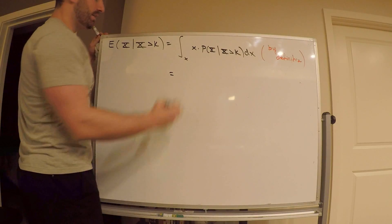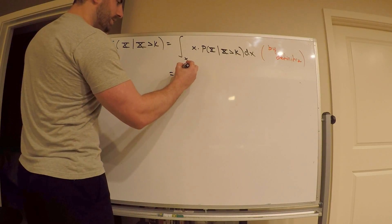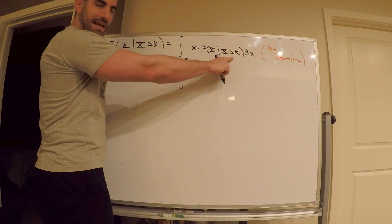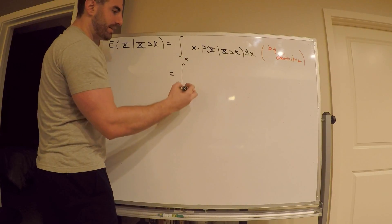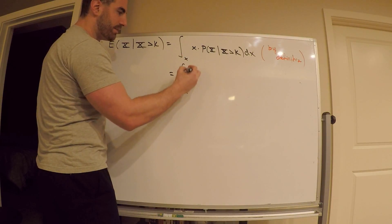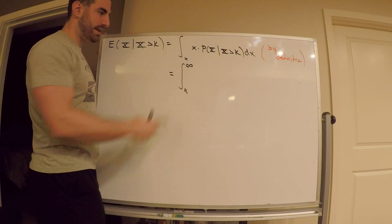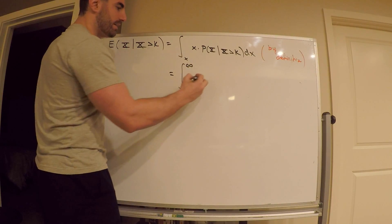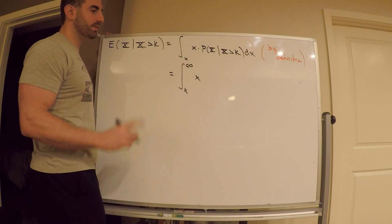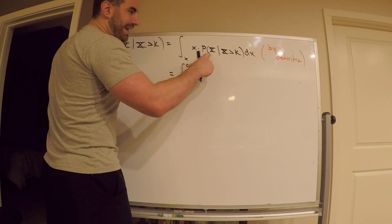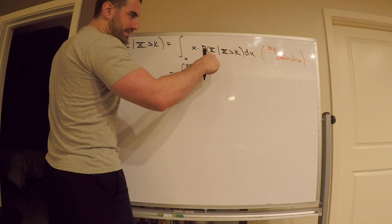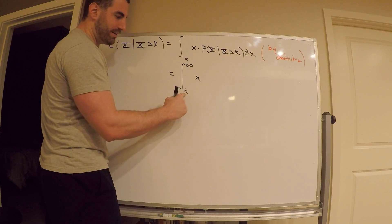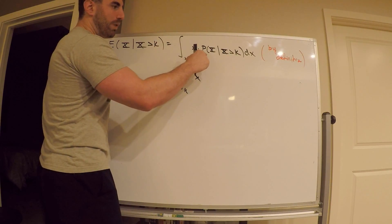By definition, the conditional PDF given X > K means we integrate from K to infinity. Since we're conditioning that X > K, we integrate over all x greater than K up to infinity. X has to be greater than K, so I'm integrating from K to infinity — that's why the lower limit is K.